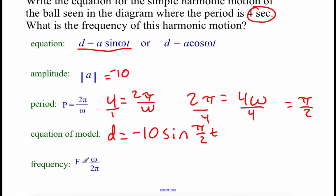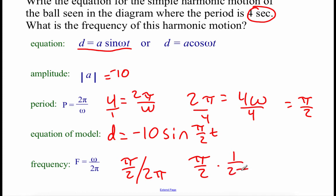The last thing to find is the frequency. We take our omega value π/2 and divide by 2π, which we can rewrite as multiplying by 1/(2π). The π's cancel out, leaving 1 on top and 2 times 2 = 4 on the bottom. So the frequency is 1/4.